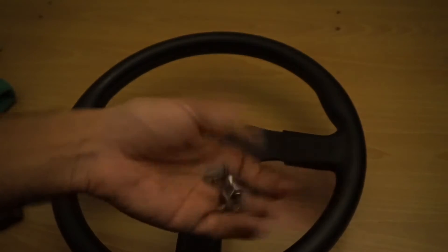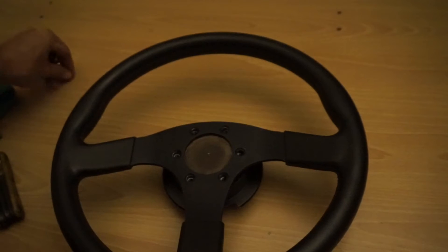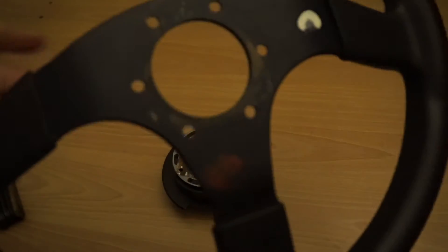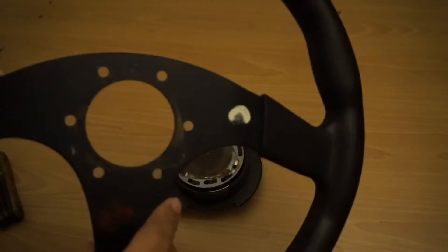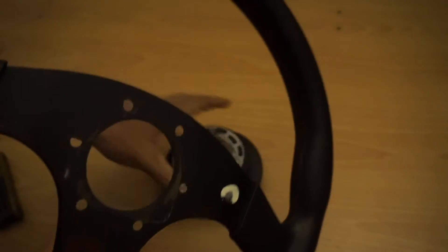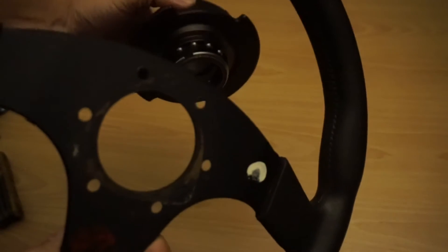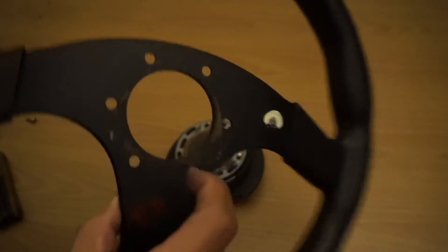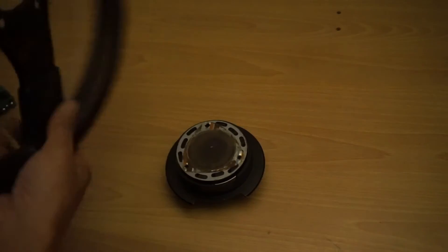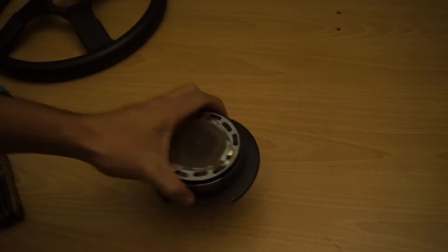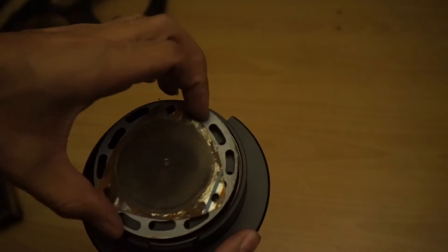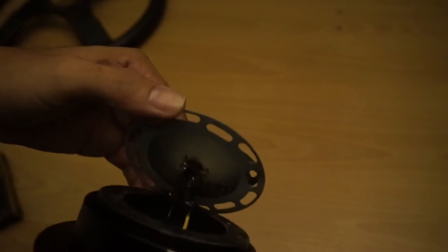All right so I got the screws off, make sure you put these in a safe place. Take off your wheel. As you can see it's got like gunk all in here, probably rust or something. It's not completely necessary to take off the quick release, but it's gonna take off all of this debris between the wheel and the quick release.